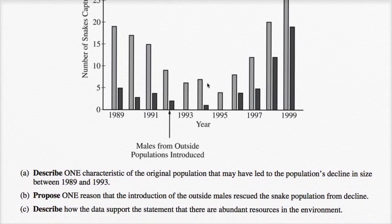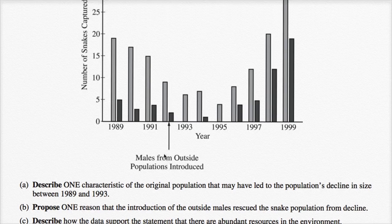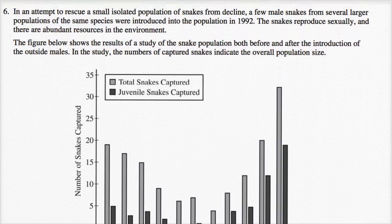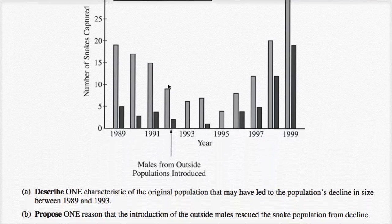The first question asks: describe one characteristic of the original population that may have led to the population's decline in size between 1989 and 1993. We can only theorize — they haven't told us a lot. They have told us it's a small, isolated population. When you have a small isolated population, some things can happen that are a lot less likely than if you have a large unisolated population.